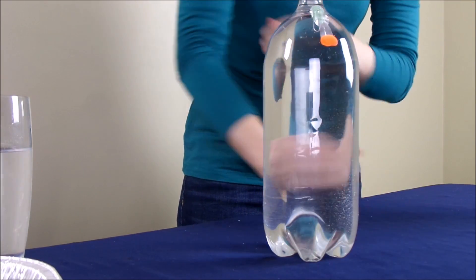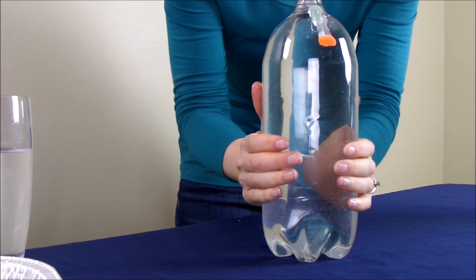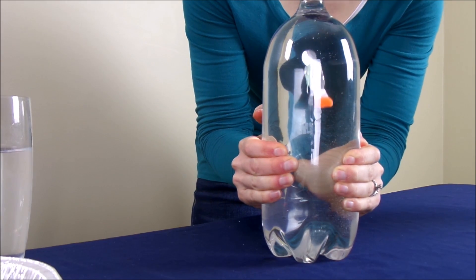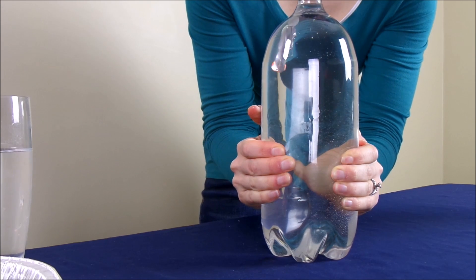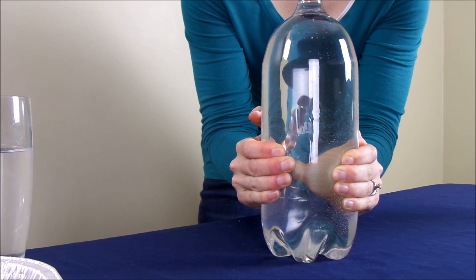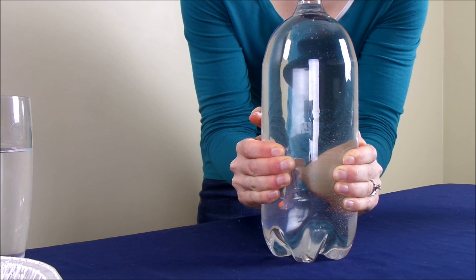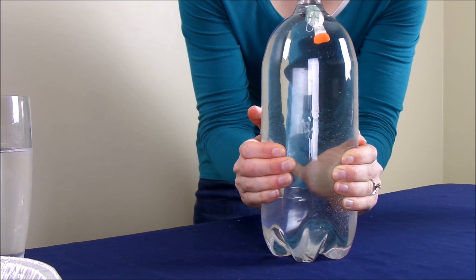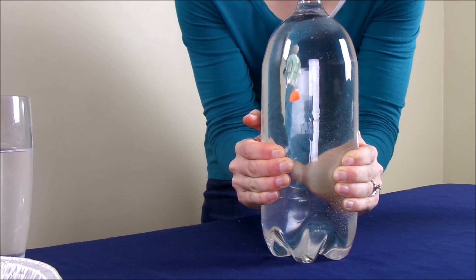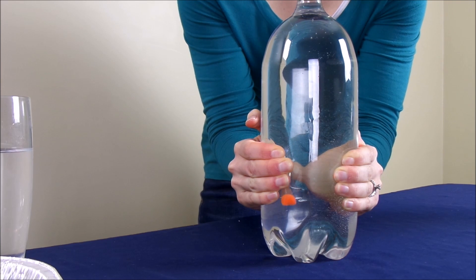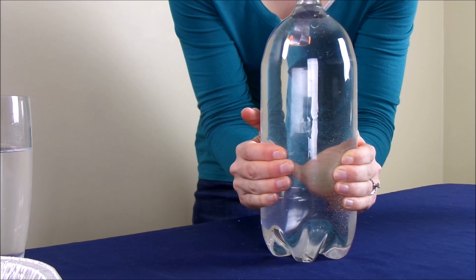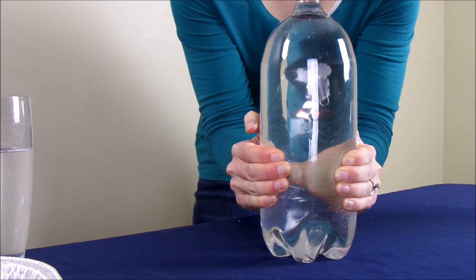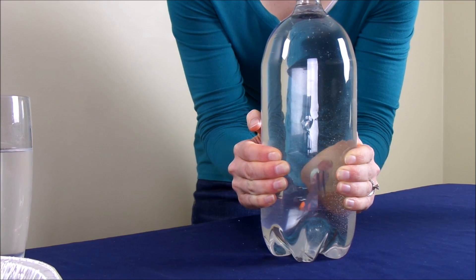To do that, you just put your hands around the bottle and squeeze. You'll see, by squeezing, the diver goes down, and by letting go, he goes back up. If you have a hard time getting the diver to move up and down, you'll want to take him out and cut a little bit off the ends of the straw. Then have fun with your diver.